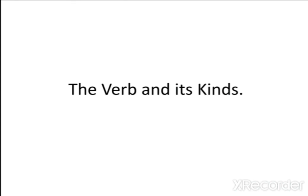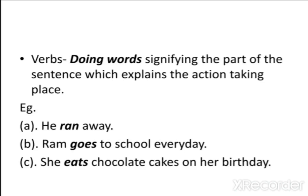When learning the rules of grammar, children are often taught that verbs are doing words — meaning verbs signify the part of the sentence which explains the action taking place. Here in these sentences, 'ran', 'eats', and 'goes' are the action parts of the sentences. Thus, they are the verbs.